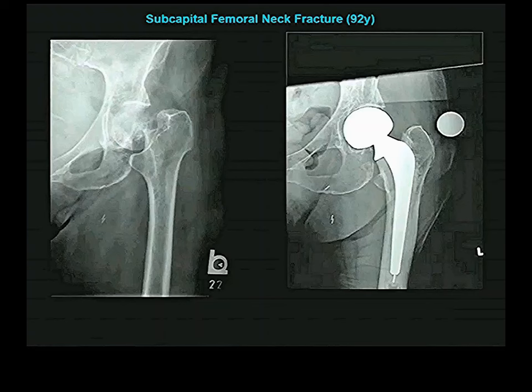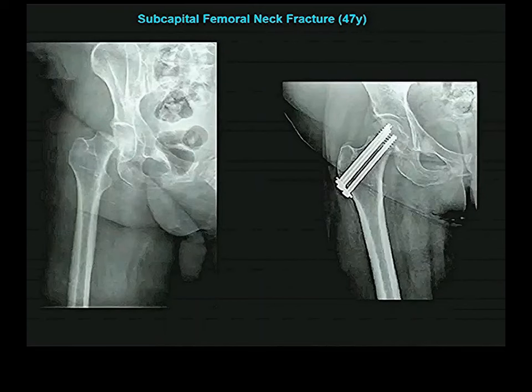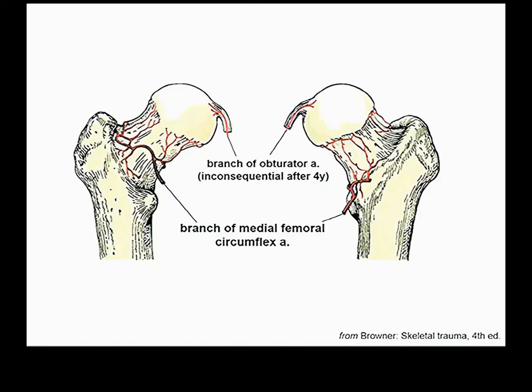They will also do this if an internal fixation has failed. Why would internal fixation fail? The medial femoral circumflex artery is the main blood supply to the head of the femur. In a child there is a secondary arterial supply via the ligamentum teres from a branch of the obturator artery, but that artery becomes inconsequential when you're quite young.